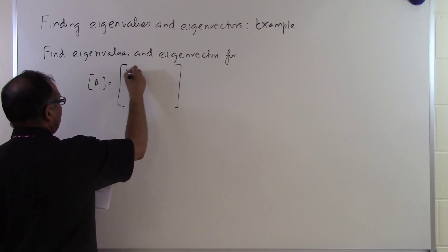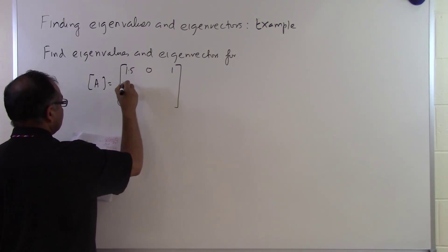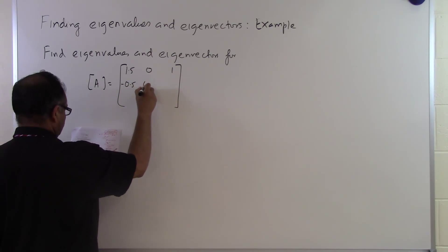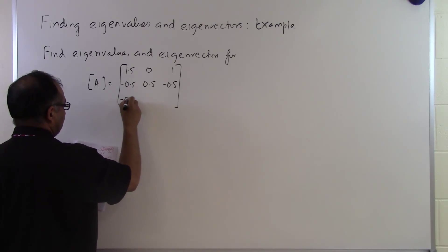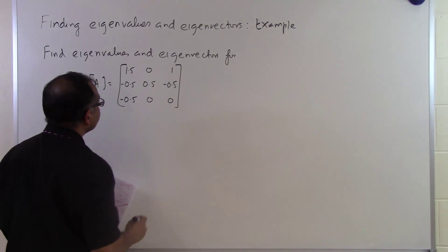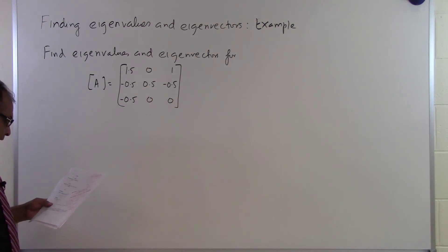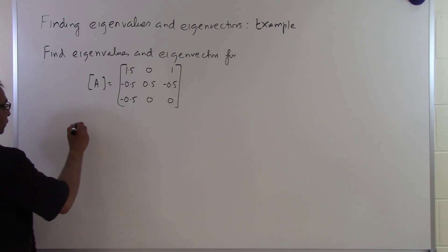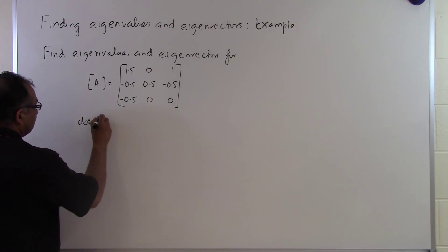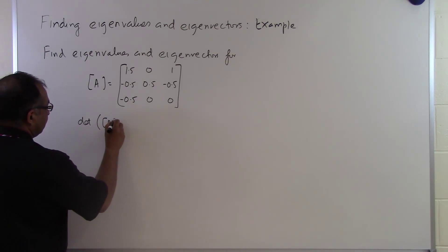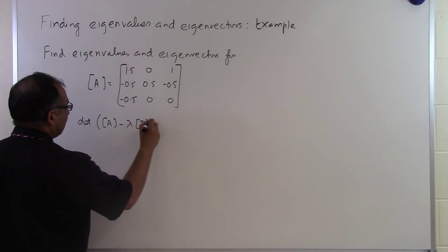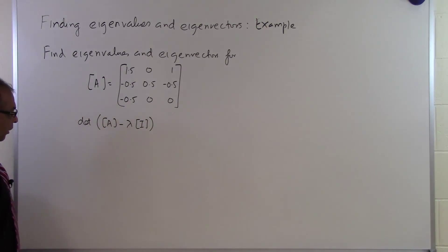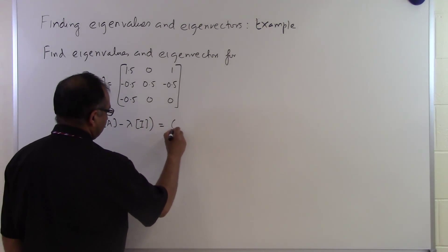The matrix has entries: 1.5, 0, 1, minus 0.5, 0.5, minus 0.5, and 0 and 0. In order to find the eigenvalues of this particular matrix, what we're going to do is find the determinant of A minus lambda times the identity matrix, and put that determinant equal to 0.